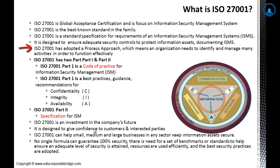ISO 27001 has adopted a process approach, meaning an organization needs to identify and manage many activities in order to function effectively. It has two parts: Part 1 is a code of practice for information security management; Part 2 is best practice guidance and a specification for information security management with recommendations for confidentiality, integrity and availability — the CIA triad — covering software, hardware, and communications.